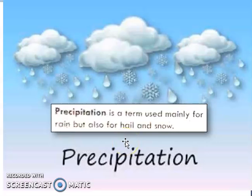In simple language: evaporation means changing water to gas on heating; condensation means changing of gas or water vapor into liquid form on cooling; and precipitation is the term for rain. You have now understood all three terms.